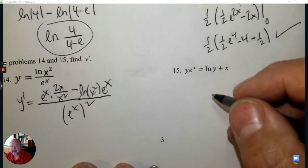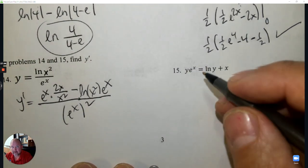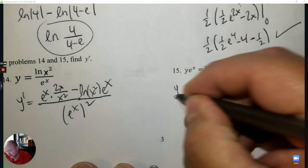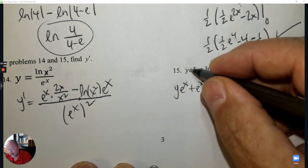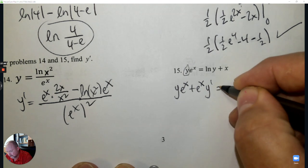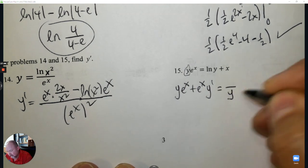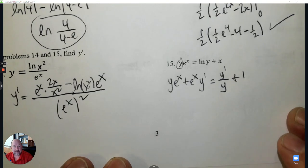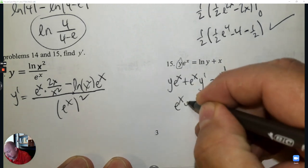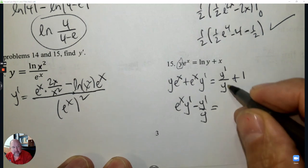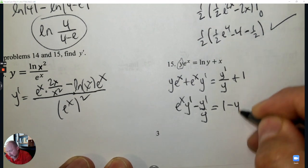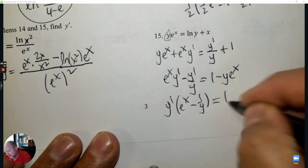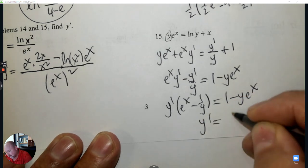Number 15: Find the derivative implicitly. Every time you take the derivative with y involved, it needs a y prime. This is the product rule: the first times the derivative of the second, plus the second times the derivative of the first. The derivative of ln y is 1/y times y prime; the derivative of x is 1. Collect y prime terms — subtract y prime over y to the left, subtract ye^x. Factor out y prime: that's e^x − 1/y. Divide and you have your answer.